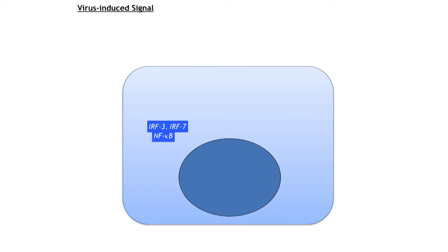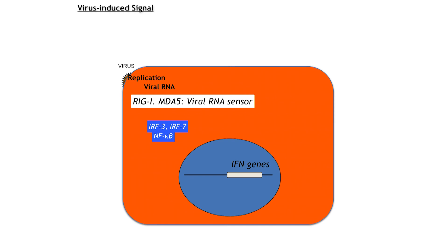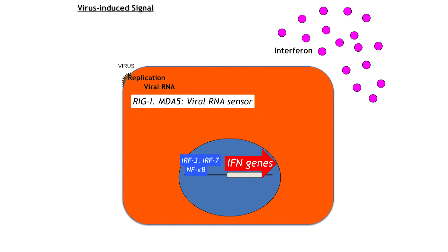Then how is interferon produced? Interferon is a group of proteins encoded in interferon genes. However, normally interferon genes are not active. When a virus infects a cell and starts replication, viral RNA is generated. This viral RNA is sensed by host sensors, RIG-I and MDA5, resulting in the activation of a cascade of events, including activation of transcription factors IRF3, IRF7, and NF-κB. These factors activate interferon genes in the nucleus, and finally interferon is secreted.